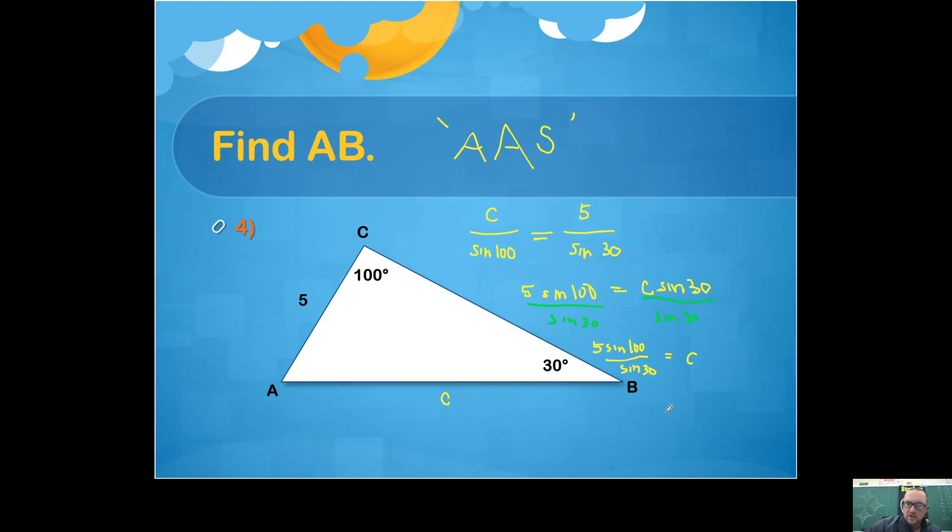Now, you're going to have to type that in your calculator. So I'm going to type in 5 sine of 100, and I'm going to divide that by sine of 30. And that's going to give me my segment length. I'm going to round to the nearest hundredth. 9.85.